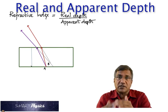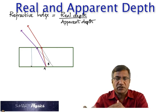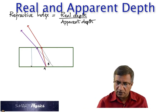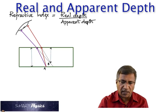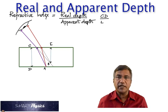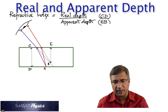So, it's not only raised, it's also shifted to the side. So, here is the real depth and this is the apparent depth. CD is the real depth and BE is the apparent depth.